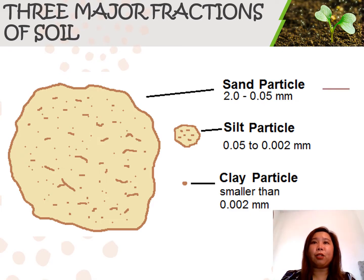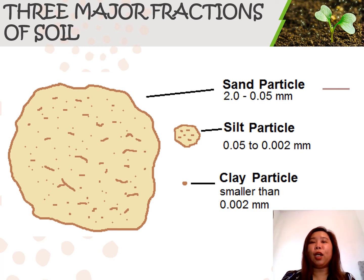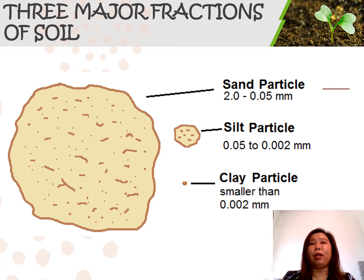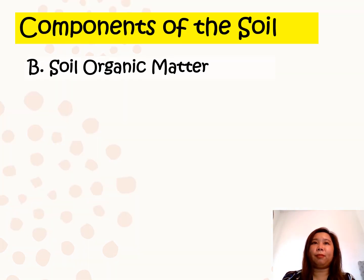These are the three major fractions of the soil: sand particles having a size of 2 to 0.05 millimeters, silt particles having 0.05 to 0.002 millimeters, and clay particles that are smaller than 0.002 millimeters. That is the mineral matter.